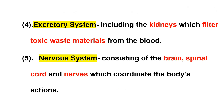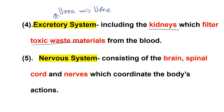Number four is the excretory system. The excretory system removes waste such as urea and urine from the body. The main organ is the kidney, which filters waste materials, including urea, from the blood for excretion.